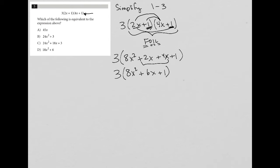And then I look at my answer choices and I notice that none of them have the three out in front still. So now last part of simplification is to distribute this three across the parentheses. So I'd have three times 8x squared, which is 24x squared.